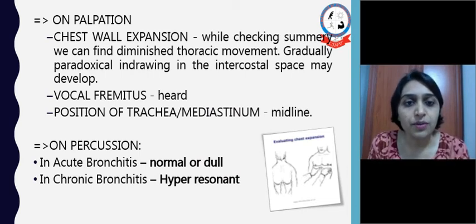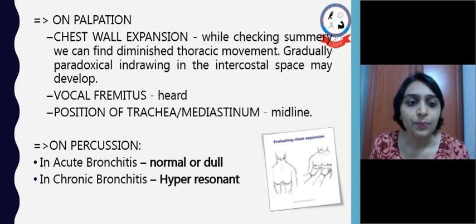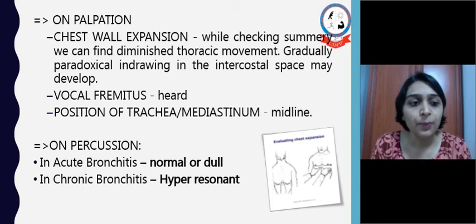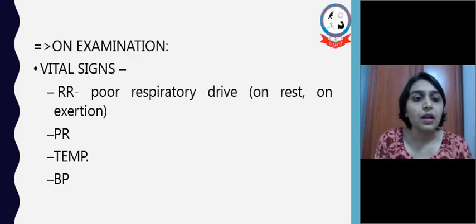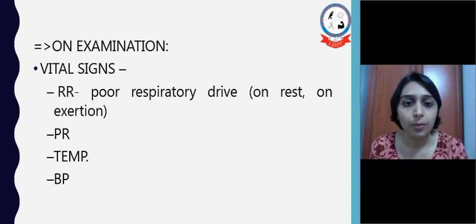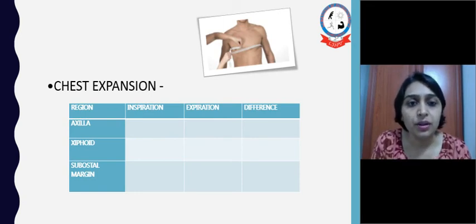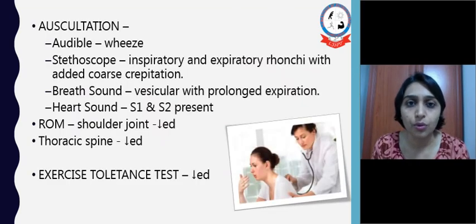On palpation, chest wall expansion shows diminished thoracic movement; paradoxical indrawing of the intercostal space may also develop. Vocal fremitus is heard. The position of the trachea or mediastinum is usually midline. On percussion, in acute bronchitis we may find a normal or dull percussion note; in chronic bronchitis there is hyper-resonance because of air trapping. On examination, we check vital signs: respiratory rate, pulse rate, temperature, and blood pressure. We also measure chest expansion by area and region, noting the difference during inspiration and expiration.